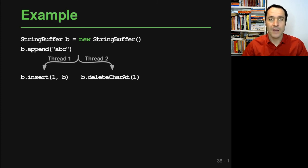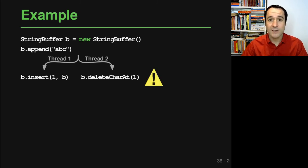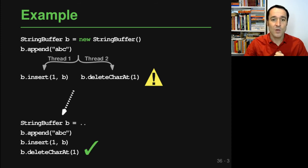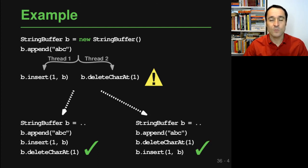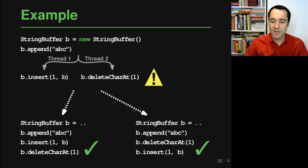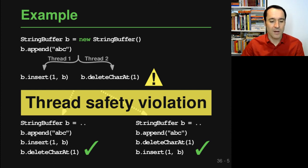If the oracle sees an exception or deadlock, it checks whether this could also happen in one of the linearizations. If the same failure also happens in a linearization, it means it's not a thread safety problem — it could happen in a single thread too, so nothing is reported. But if the same failure does not happen in this or any other linearization, a thread safety violation is reported. In our StringBuffer example, neither linearization produces an exception, so the exception seen in concurrent execution is confirmed as a thread safety violation and reported.